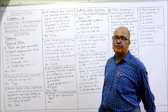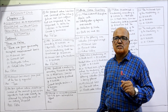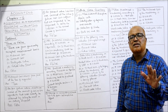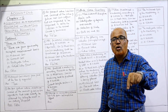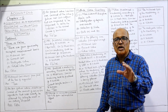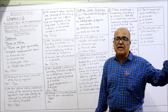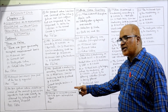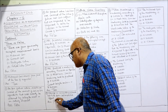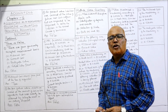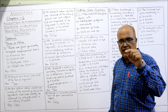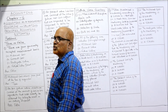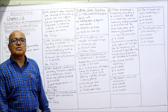Next: 'Change in accounting estimate has to be given retrospective effect.' Retrospective effect means from the beginning. For example, if we have used a machine for 5 years and then need to change the policy, we cannot apply the change from the beginning — we can only make the change from now onwards. So any change in accounting estimate should not be retrospective; it should be prospective. Therefore this statement is FALSE.